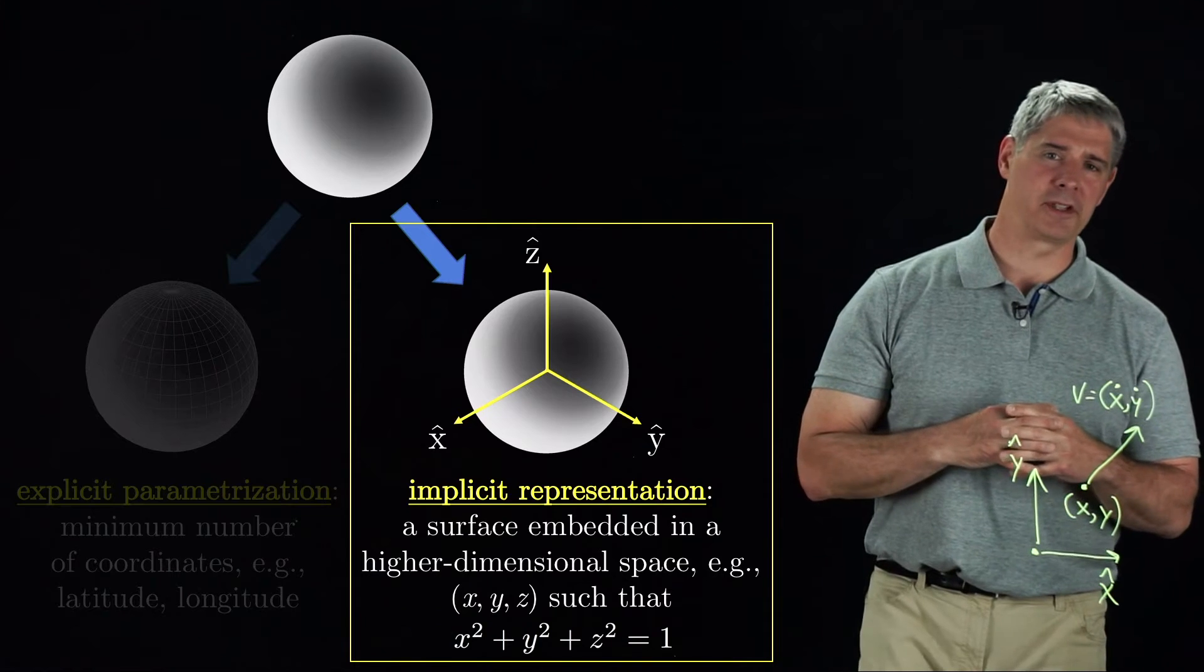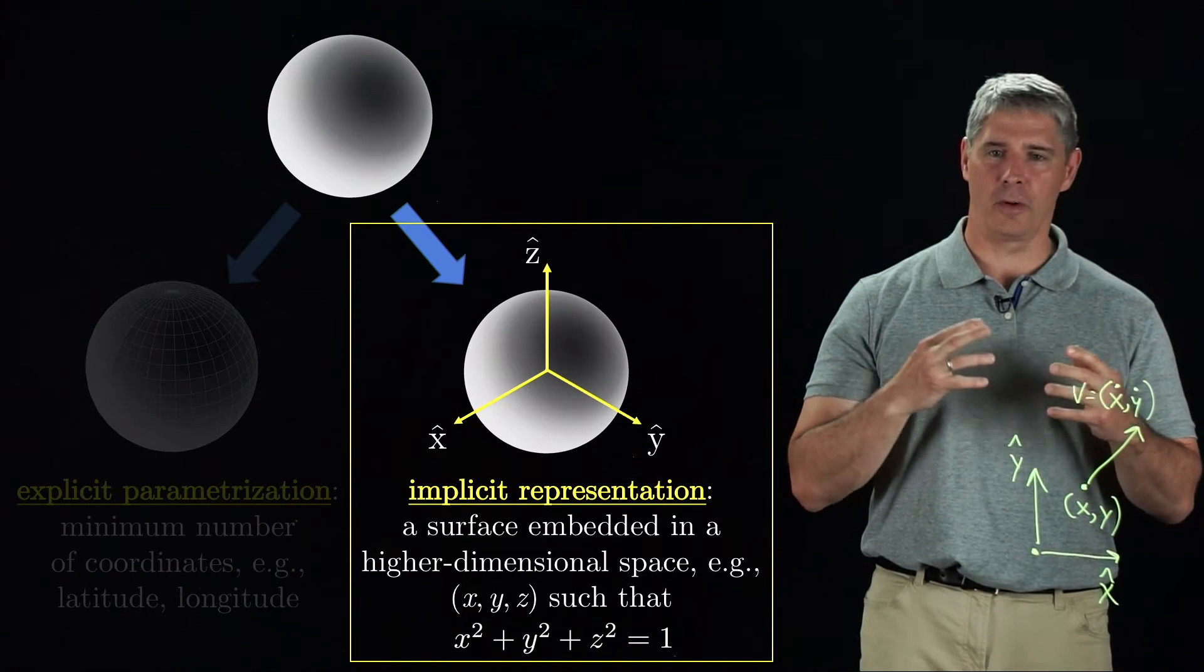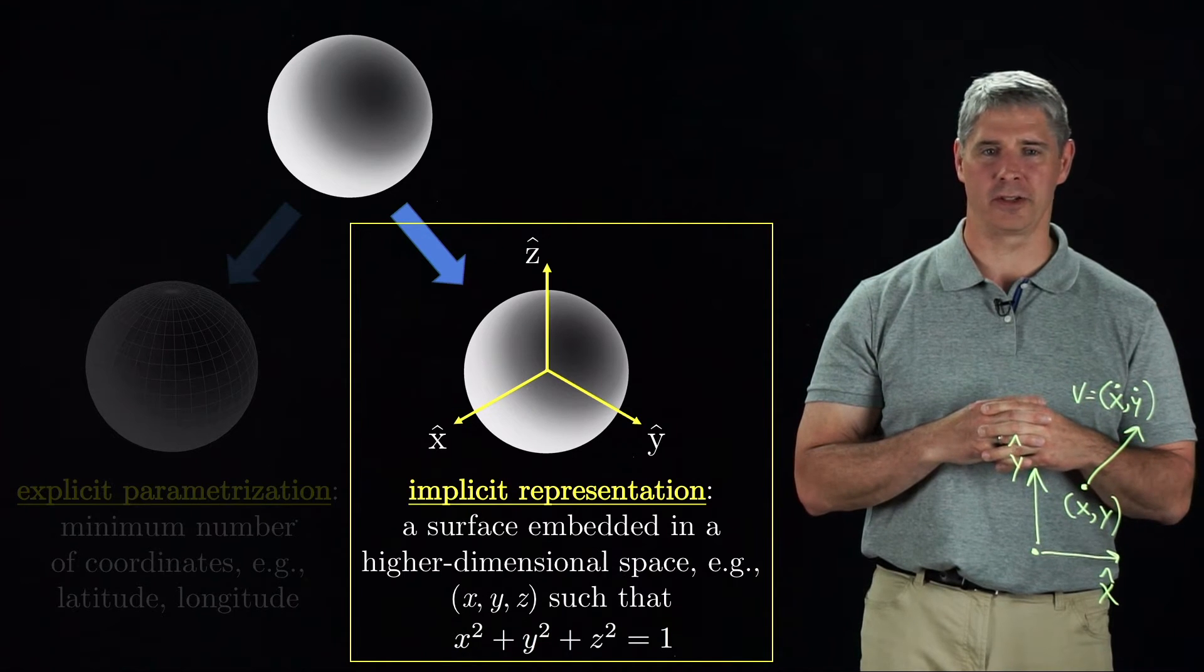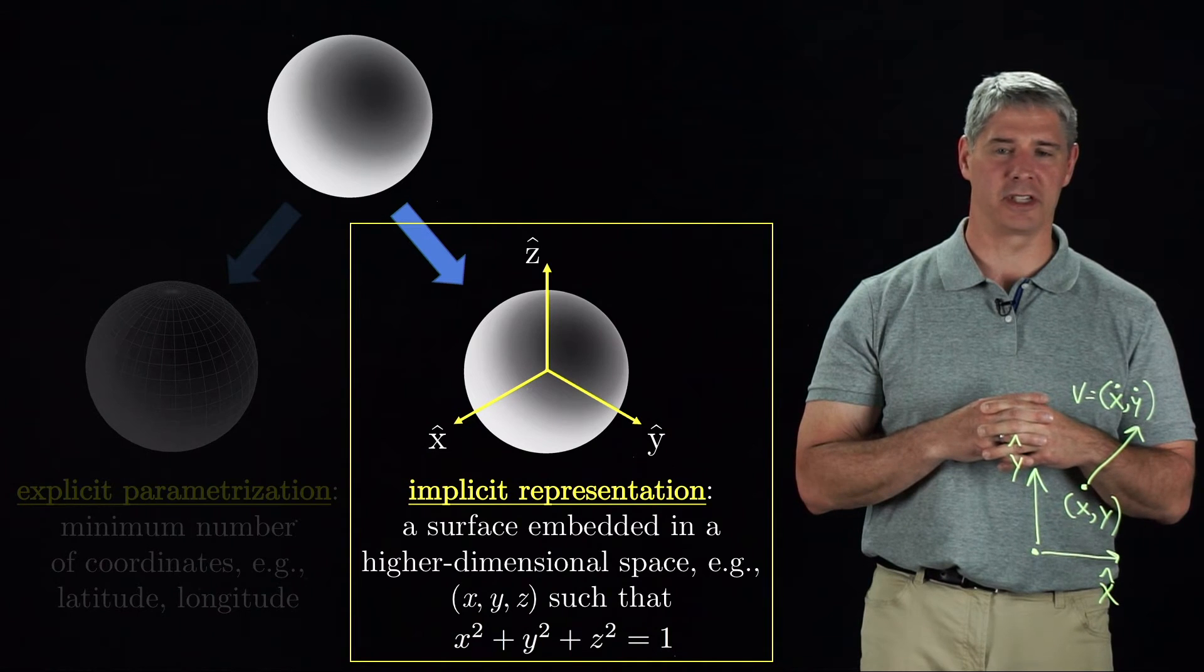With the implicit representation using XYZ coordinates subject to one constraint, there are no problems anywhere with discontinuities or rapidly changing coordinates. The disadvantage is the somewhat greater complexity of the representation.